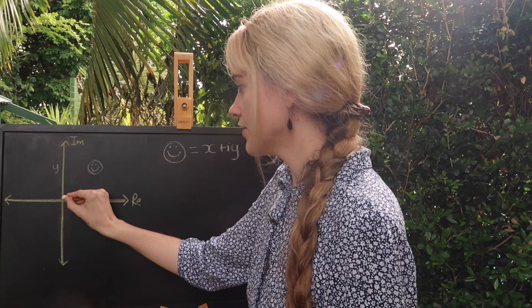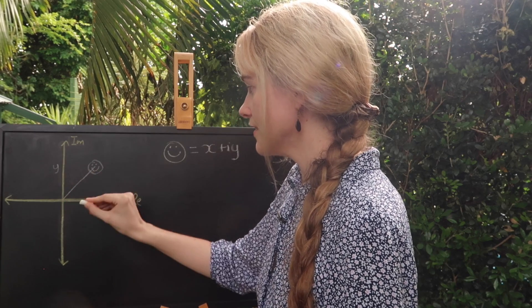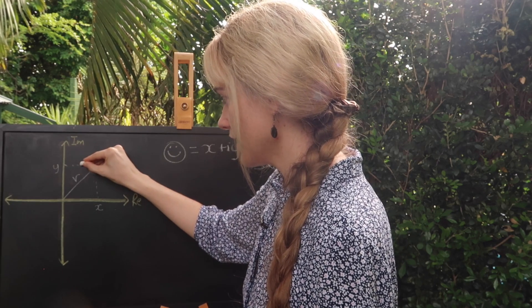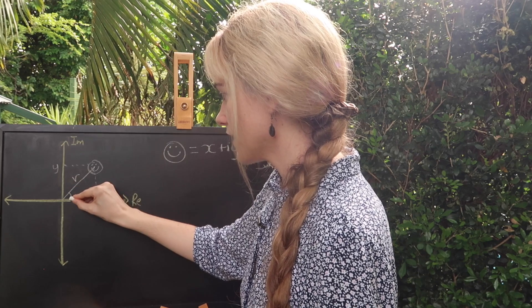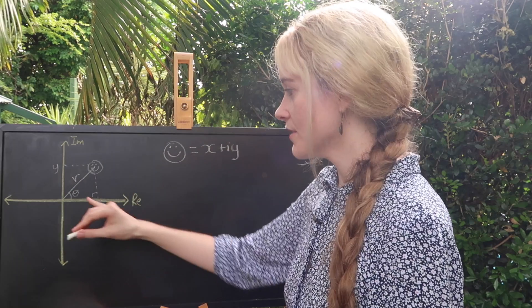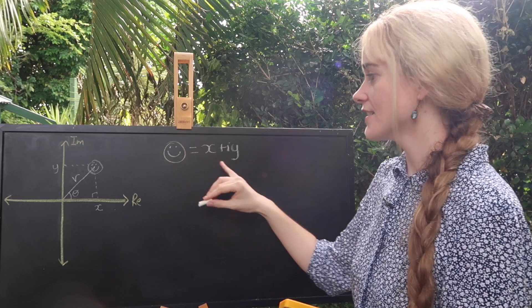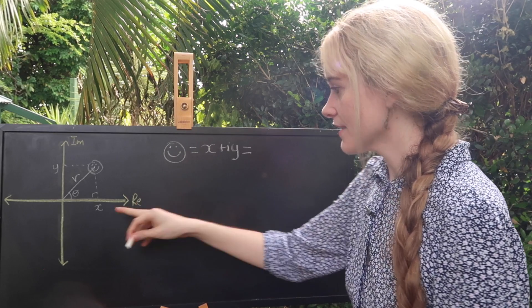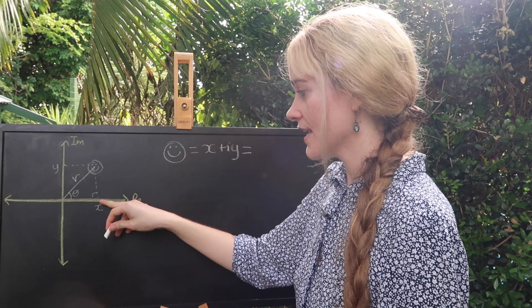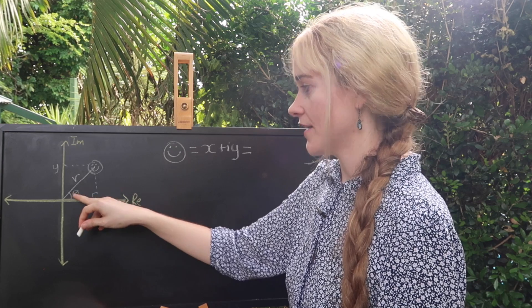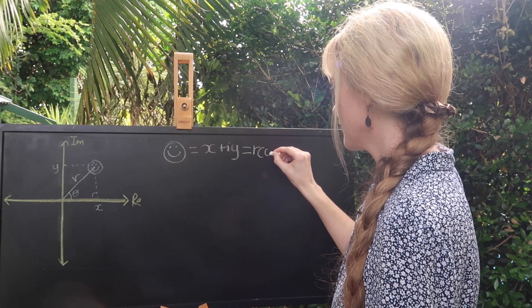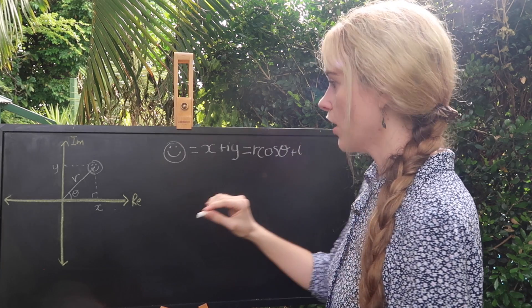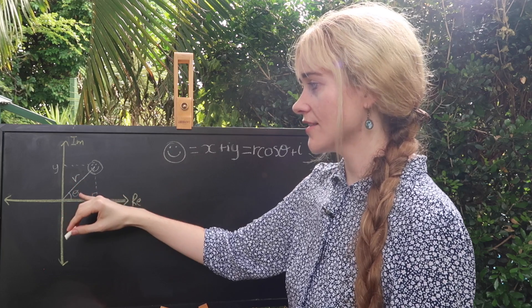If we draw a straight line between the origin and where our friend is we can call that r and it actually allows us to set up some triangles in here where this angle here is theta. Using a bit of trigonometry we can actually rewrite expressions for x and y using sine and cosine. So x will be r cosine of theta, and y will be r sine of theta.